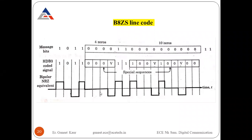B8ZS stands for Binary 8-Zero Suppression — B for binary, 8 for eight consecutive zeros, Z for zeros, S for suppression. This line code was introduced to ensure synchronization. Whenever eight successive zeros are detected, the implementation automatically inserts a special 8-bit sequence code, similar to how HDB3 inserts a special sequence for four consecutive zeros.